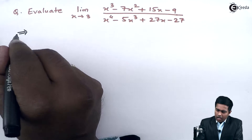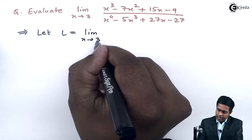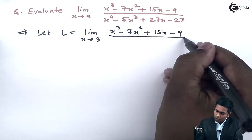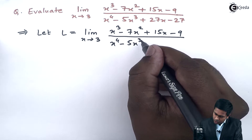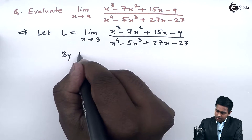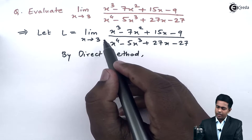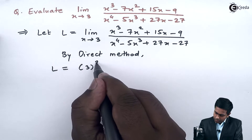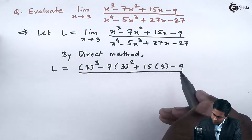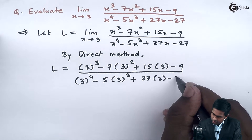Let me assume this given limit as L. So L equals the limit as x tends to 3 of (x³ - 7x² + 15x - 9) upon (x⁴ - 5x³ + 27x - 27). By the direct method, we substitute the value 3 into the given function. So in the numerator we get 3³ - 7(3²) + 15(3) - 9, and in the denominator we get 3⁴ - 5(3³) + 27(3) - 27.